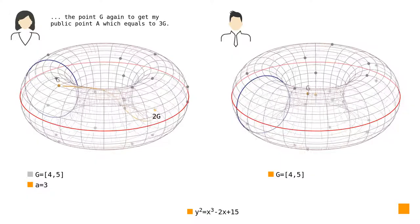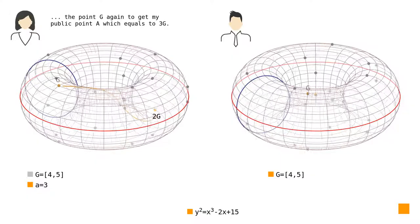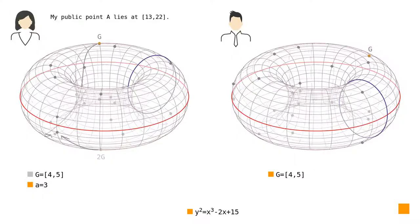Now she multiplies the generator by her secret number and thus creates her public key. First, I double the point G to get the point 2G, and then I add the point G again to get my public point A which equals 3G. My public point A lies at (13, 22).